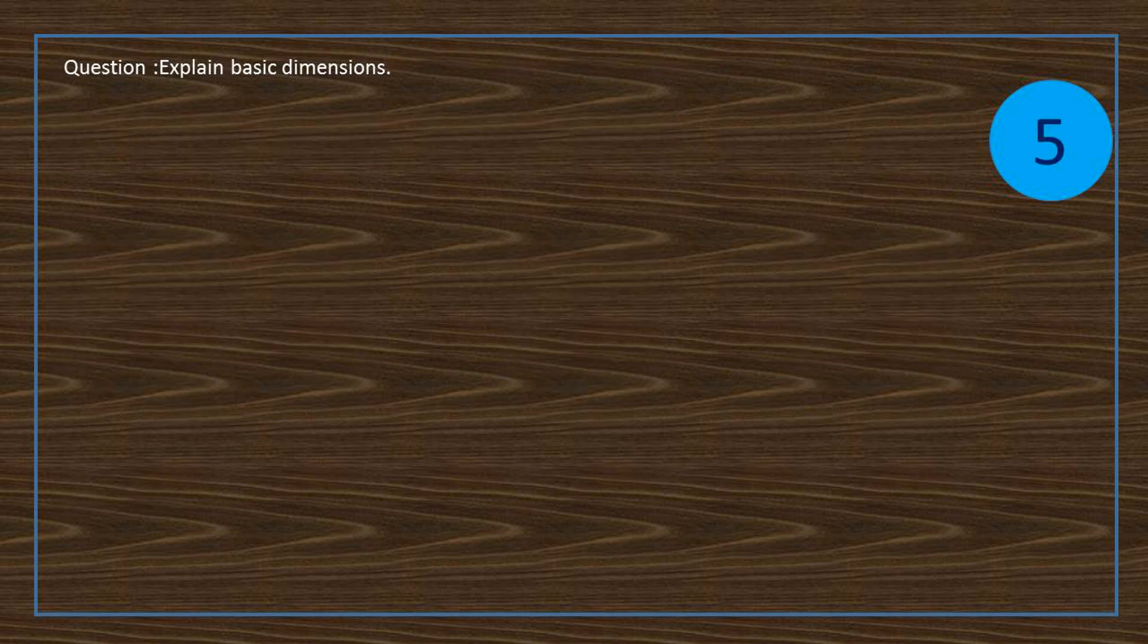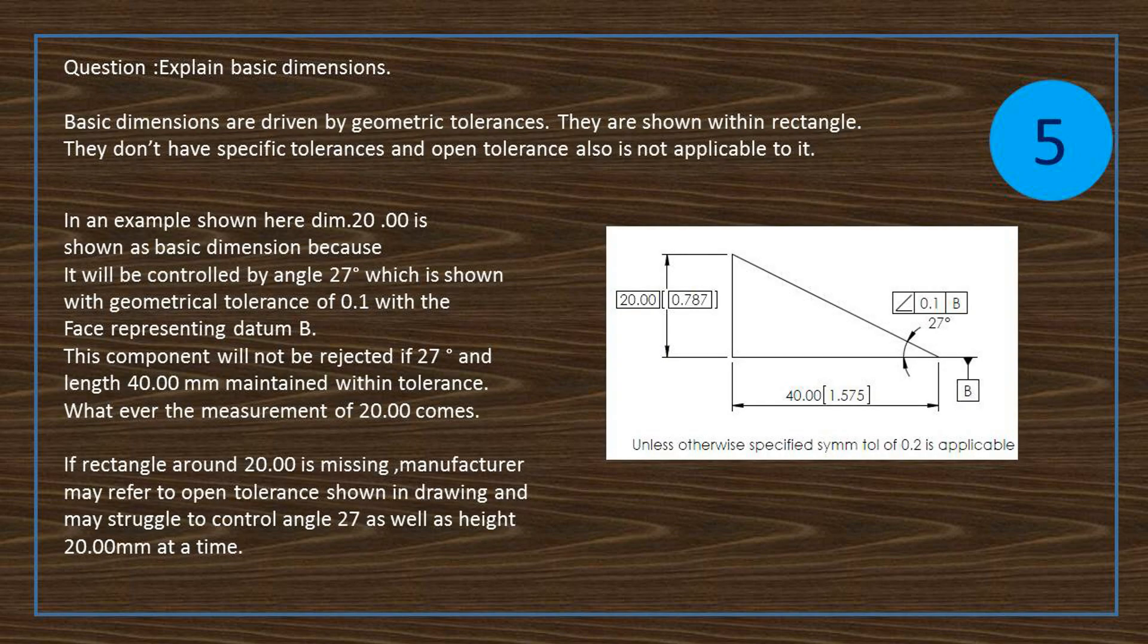Explain basic dimensions. Basic dimensions are driven by geometric tolerances. They are shown within rectangle. They don't have specific tolerances and open tolerance also is not applicable to it.